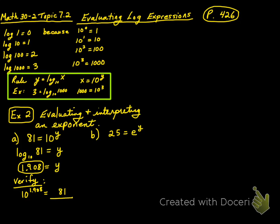In part B, 25 is equal to e to the power of y. The log base e of 25 is equal to y, and we say y is the natural log of 25. Using your calculator, the natural log of 25 is 3.218.